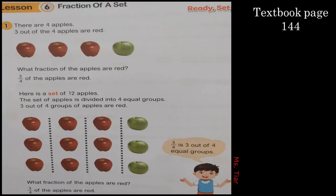Question number one: there are four apples. Three out of four are red. The total is four, but three of them are red and one is green. What fraction of the apples are red? Of course, we have three out of four — the fraction is three-fourths.